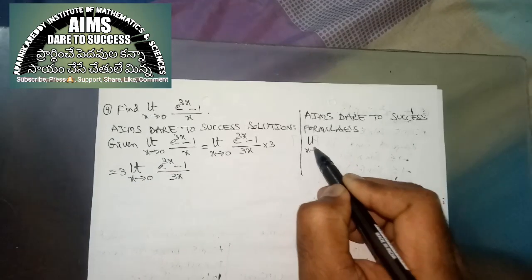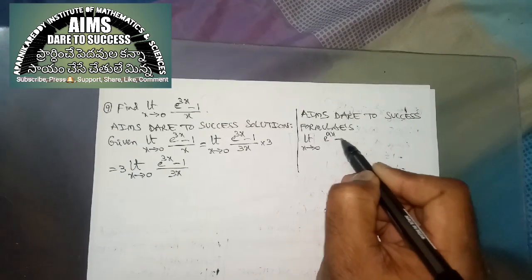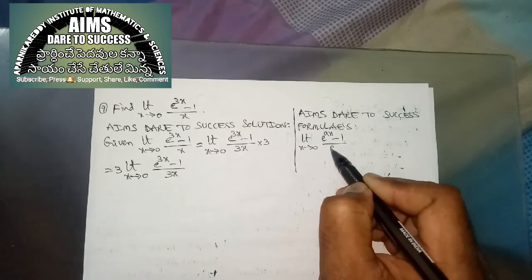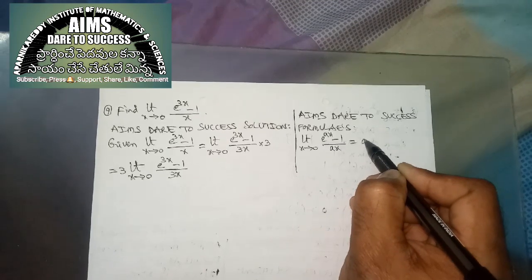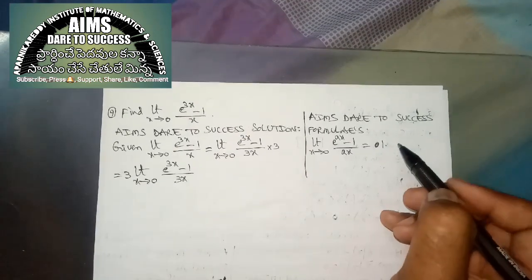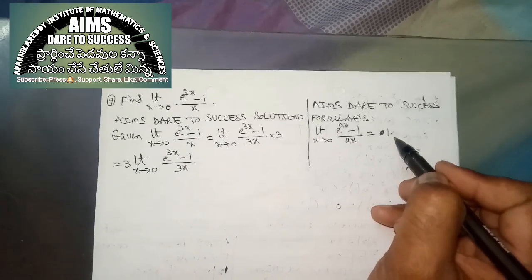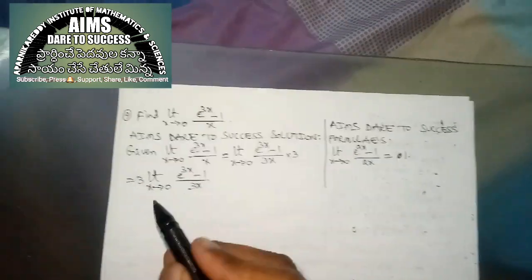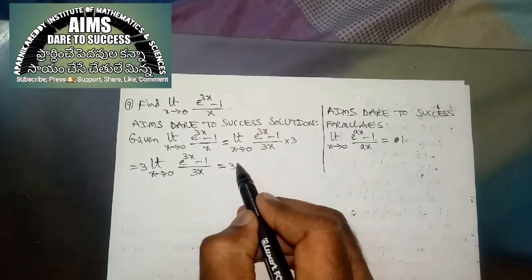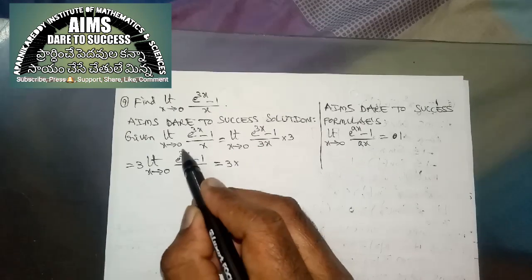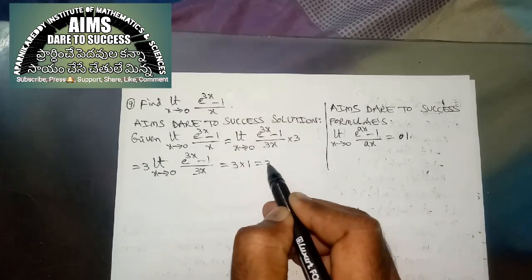Limit x tends to 0, e power ax minus 1 by ax is 1. According to this formula, we are having 3 into e power 3x minus 1 by 3x is 1. So 3 times 1 is 3.